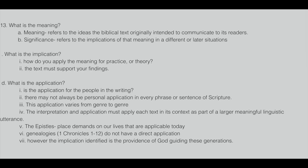Here are some helpful tips by genre. When approaching the pastoral epistles written by Paul, John, or others, those place demands on Christian living that are applicable to us today. When looking at genealogies — like 1 Chronicles chapters 1 through 12 — a genealogy doesn't have a direct personal application for us today, but the implication is the providence of God guiding those generations. Check me out next time as we look at examples in scriptural passages.